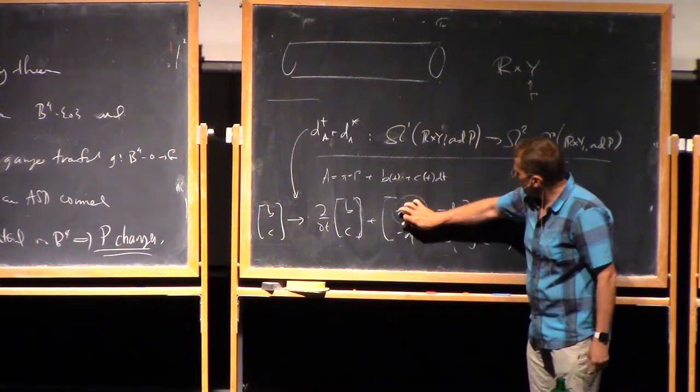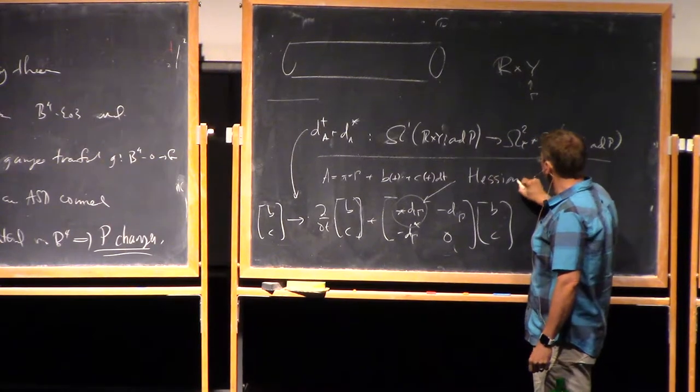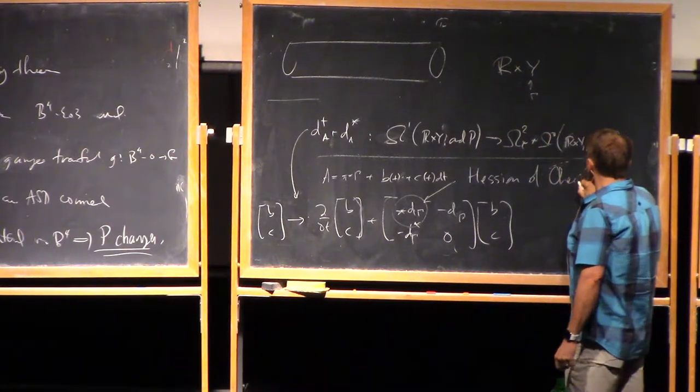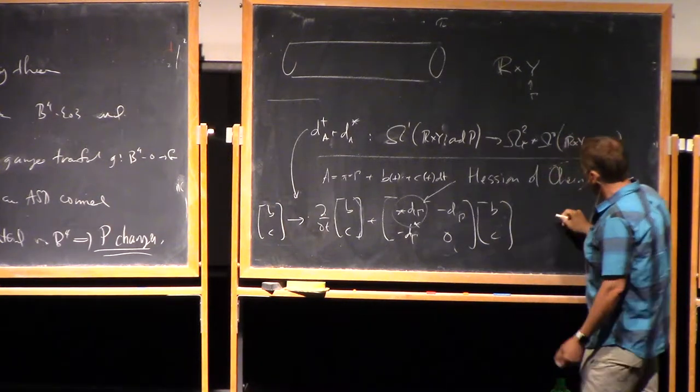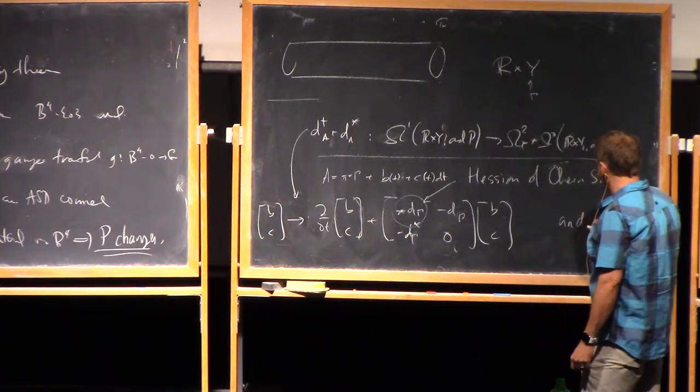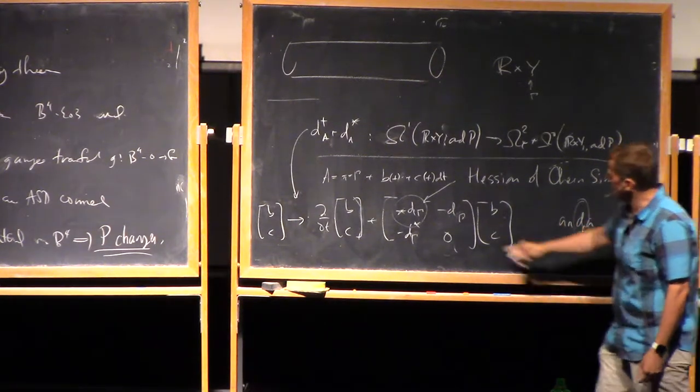That's gamma. If you look at this bit, that's the Hessian of the Chern-Simons function. Right, Chern-Simons function, its derivative term was something like this, so its Hessian is basically this operator.